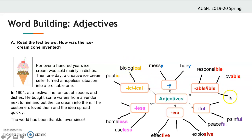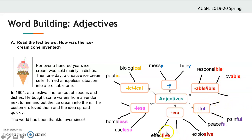As you can see, we have some missing adjectives on the chart — one for the -ive suffix, one for -ful, one is missing here, and one for -less. Let's go back to the text and find these adjectives and write them on our web.